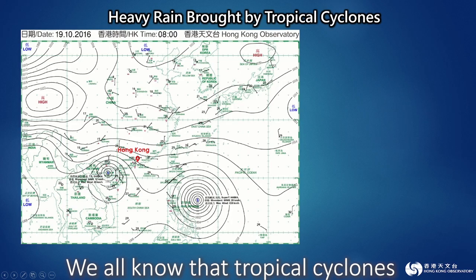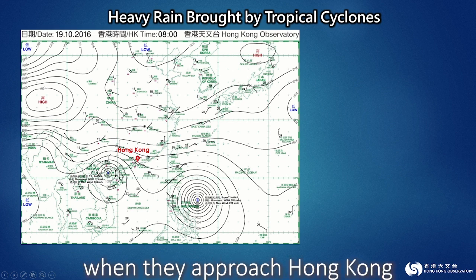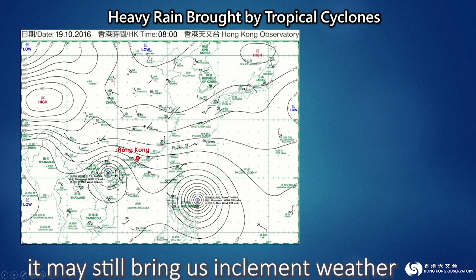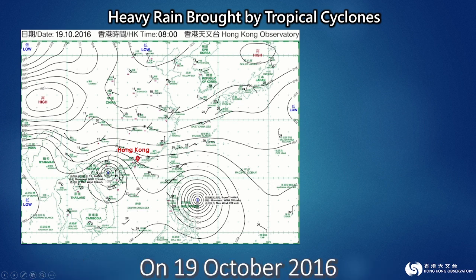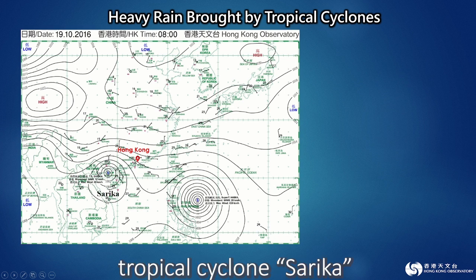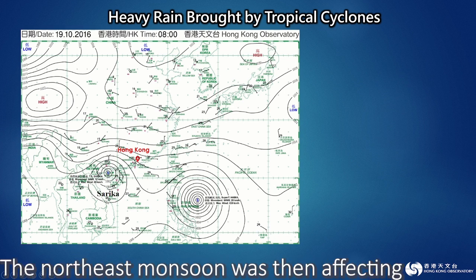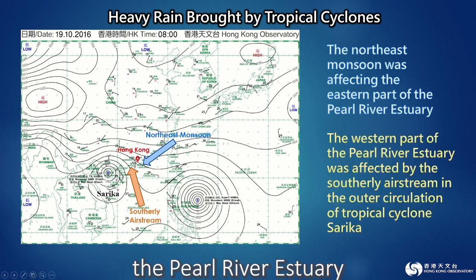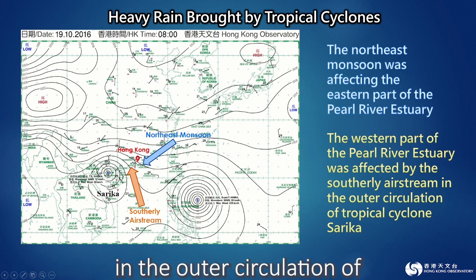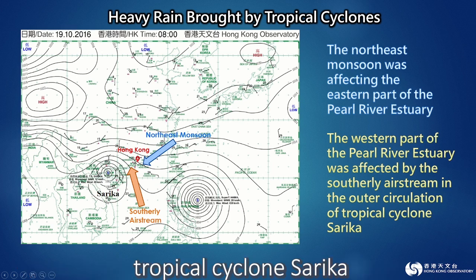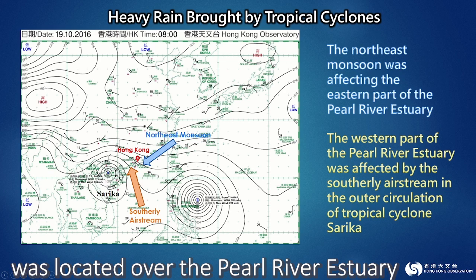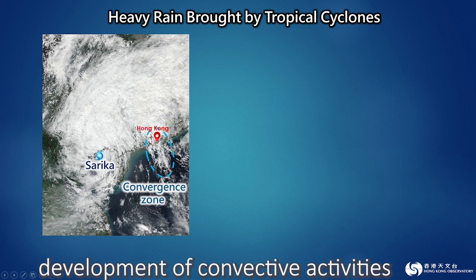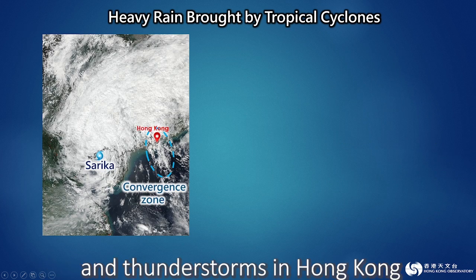We all know that tropical cyclones sometimes bring heavy rain when they approach Hong Kong. However, even if a tropical cyclone has already departed from Hong Kong, it may still bring us inclement weather. On 19 October 2016, tropical cyclone Sarika moved into Beibuwan. The northeast monsoon was then affecting the eastern part of the Pearl River estuary, while the western part was affected by the southerly airstream in the outer circulation of tropical cyclone Sarika. The converging zone between them was located over the Pearl River estuary, which facilitated the continuous development of convective activities and caused prolonged heavy rain and thunderstorms in Hong Kong.